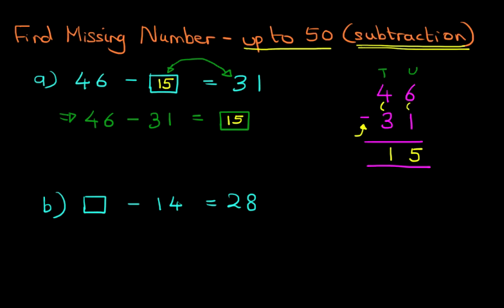So that was nice and simple. Now let's have a look at the second one. This time we've got the missing number at the beginning. Missing number minus 14 equals 28.